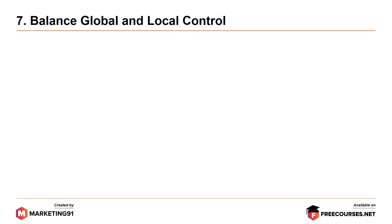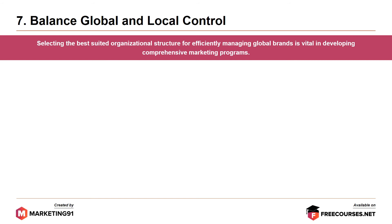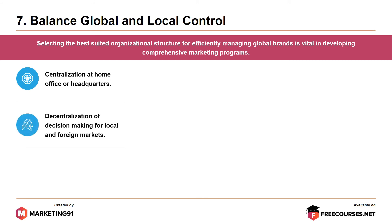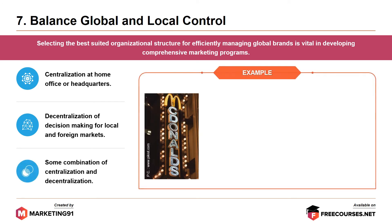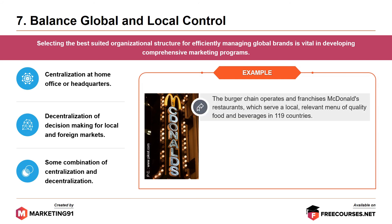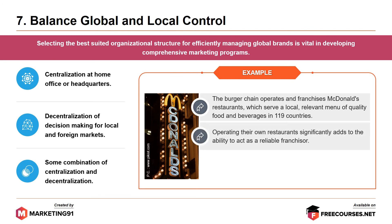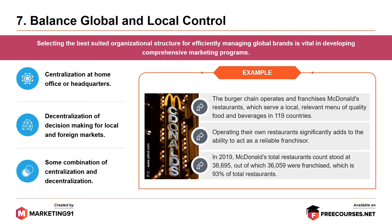Moving on to the seventh commandment: balance global and local control. Selecting the best-suited organizational structure for efficiently managing global brands is vital. There are three options: first, centralization at home office or headquarters; second, decentralization of decision making for local and foreign markets; and finally, some combination of centralization and decentralization. The example is McDonald's franchising model. McDonald's operates and franchises restaurants serving a locally relevant menu in 119 countries. In 2019, McDonald's total restaurant count stood at 38,695, of which around 36,000 were franchised — 93% of total restaurants.